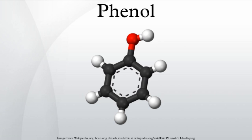Phenol is reduced to benzene when it is distilled with zinc dust or its vapor is passed over granules of zinc at 400°C: C6H5OH + Zn → C6H6 + ZnO. When phenol is reacted with diazomethane in the presence of boron trifluoride, anisole is obtained as the main product along with nitrogen gas: C6H5OH + CH2N2 → C6H5OCH3 + N2.